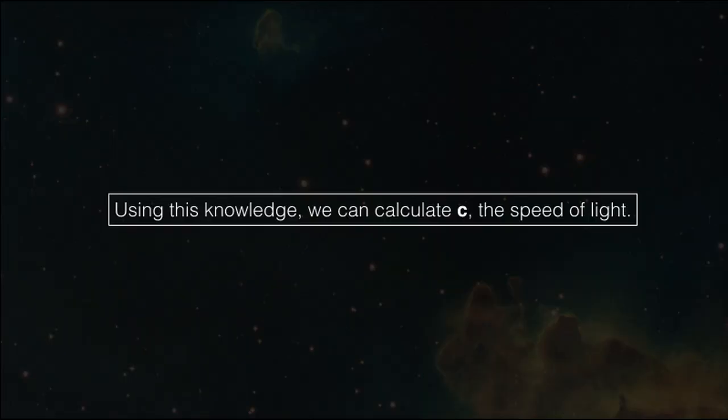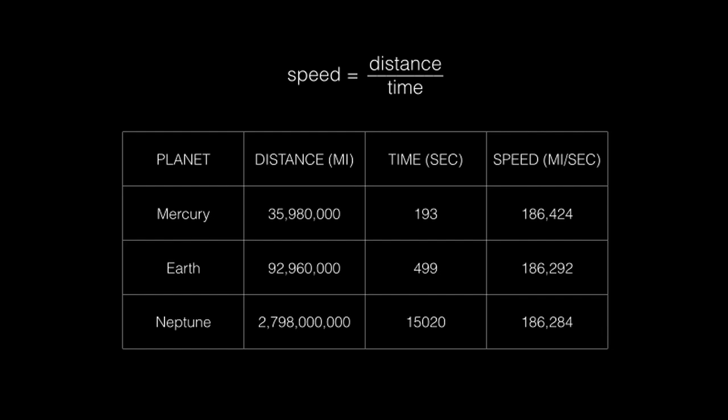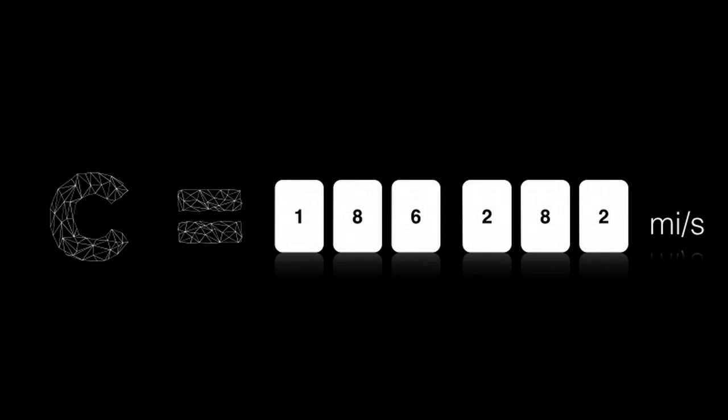Using this knowledge, we can calculate C, the speed of light. Speed is equal to distance over time, so if we plug in all the variables, we get speed to be about 186,282 miles per second. That's fast.